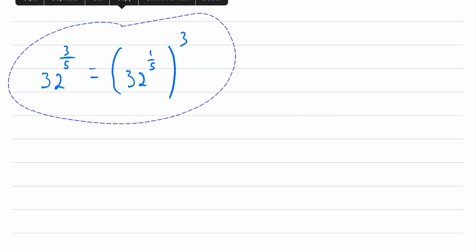Then, using our knowledge from the previous example, we can rewrite this as a root of 32. But which root? Well, the fifth root. And then, all of this is getting cubed. So here's the idea. With a fractional exponent, the denominator tells us what root to take. The numerator is left as an exponent.